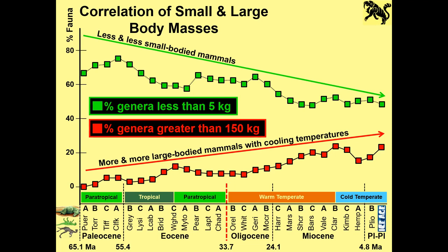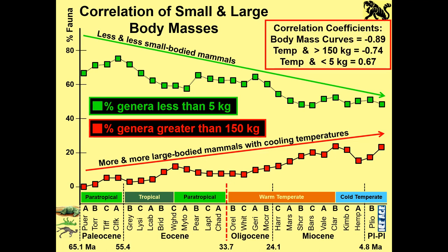We can also look at more and more large-bodied mammals with cooling temperatures — generally greater than 150 kilograms, shown in red. There aren't many large mammals in the Paleocene. You get more through the Eocene, it levels off a little, and through the Miocene you get more and more. Through the cold-temperate Plio-Pleistocene, you get quite a few more. The correlation coefficients between these two body mass curves are kind of a mirror image.